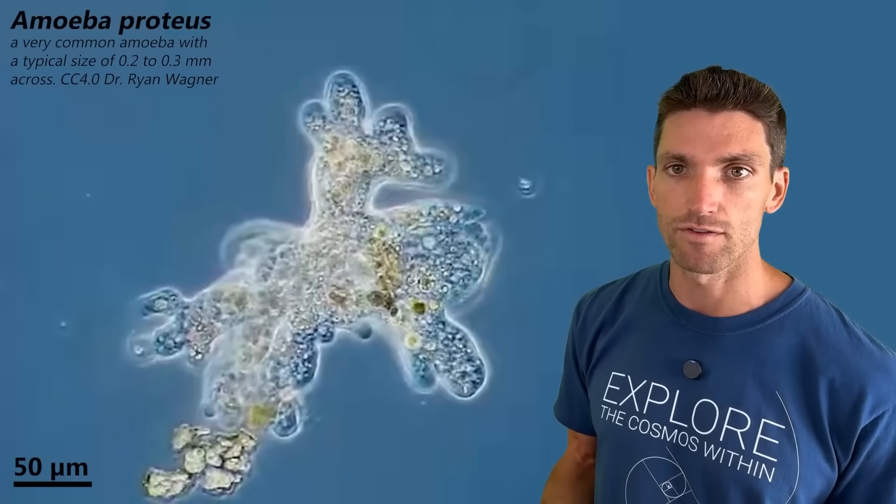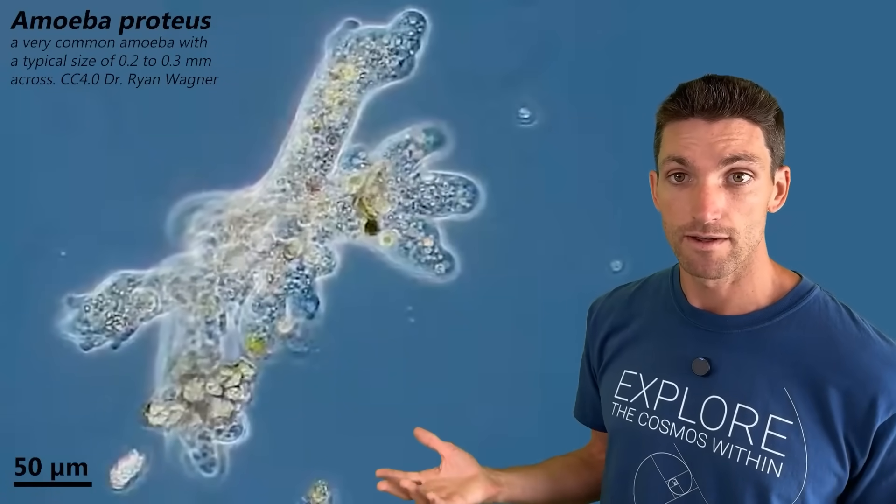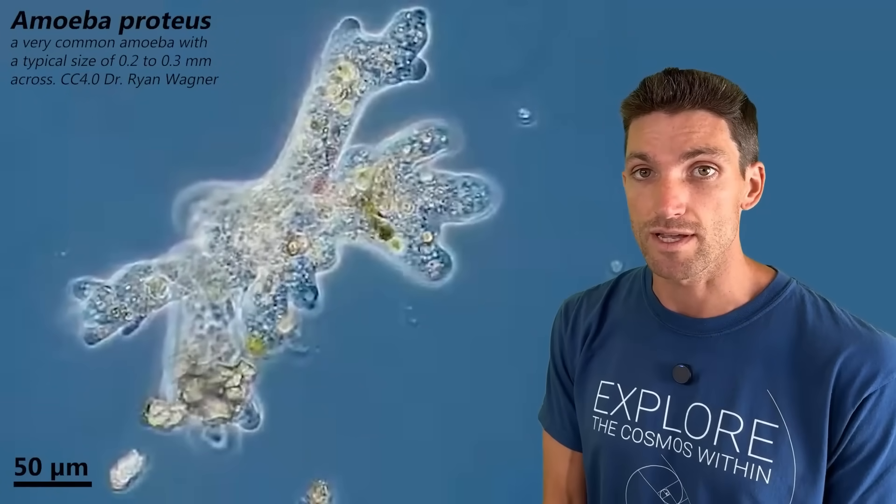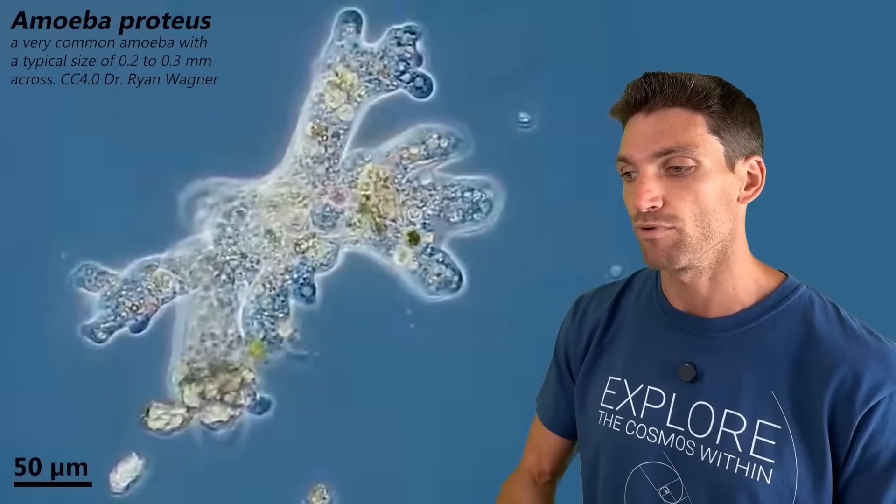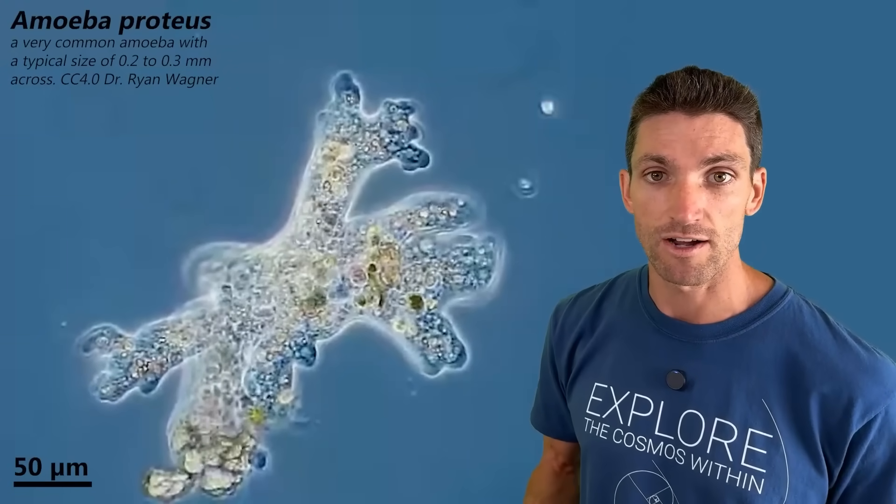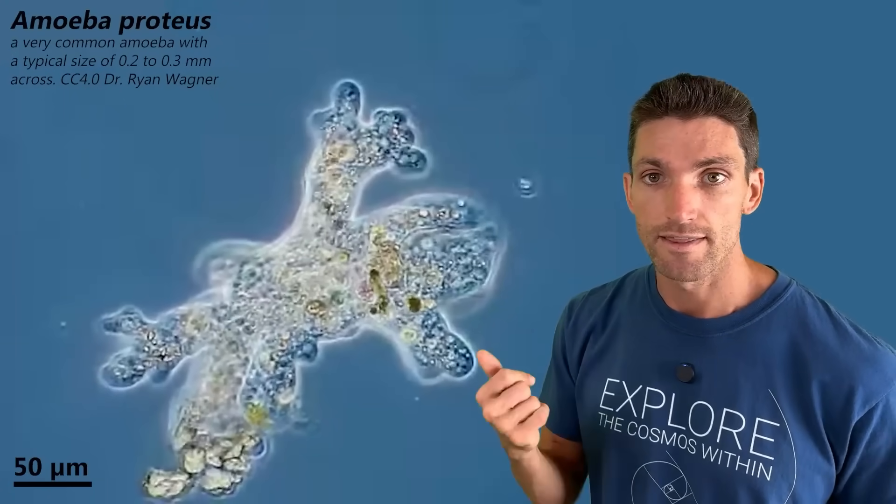So you kind of take that model of understanding and apply it here. And you can start to see how there could be solar plasmoid organisms. And you bring in an understanding of plasma consciousness and now all of a sudden, things start to make sense.